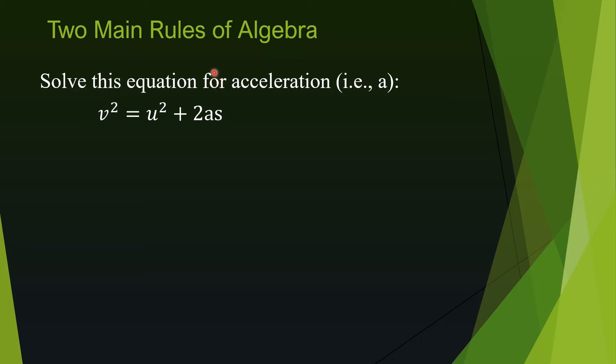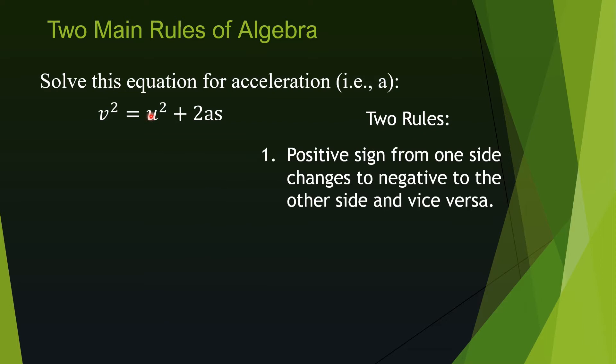This question is asking us to solve the equation for a. To isolate it, we need to move the first term u squared to the left side. When we move a term that has a positive sign, or no sign means positive sign, to the other side, it becomes negative. So that is the first rule.